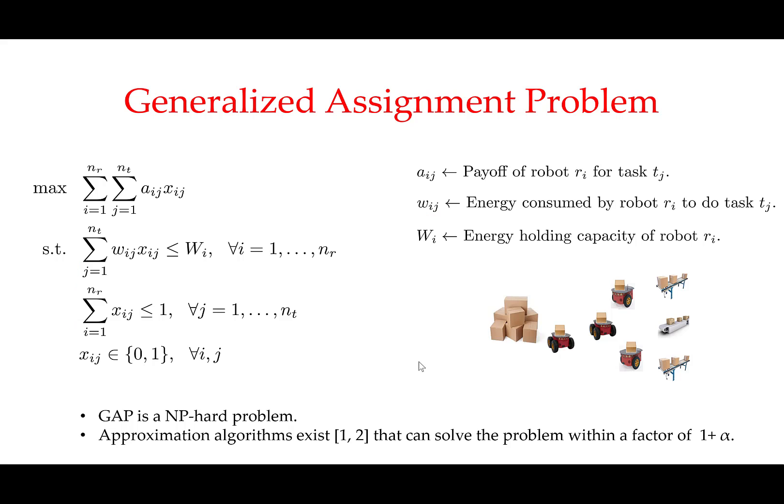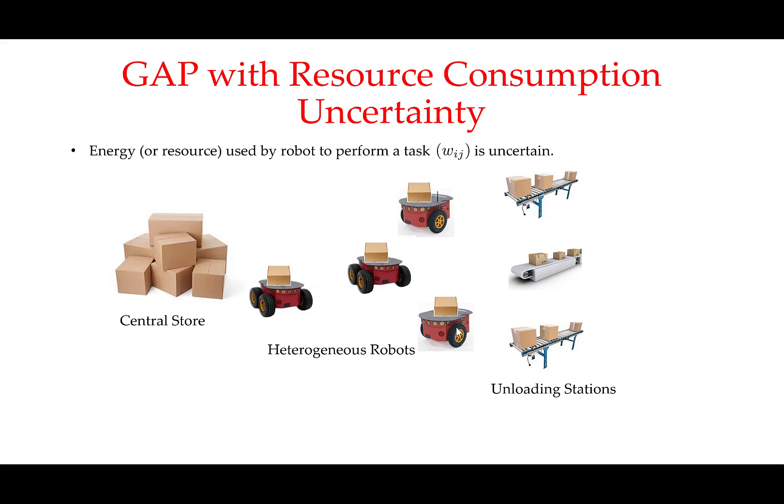Apart from the package delivery scenario, GAP can also be used to model scenarios that arise in package transfer with quadrotors or even in environmental sensing problems. In the classical formulation of the generalized assignment problem, it is assumed that the energy consumed to perform a particular task is deterministic. However, in practice, the resource consumption is a stochastic variable and depends upon unmodeled environmental variables. For example, for a quadrotor carrying a package, the wind speed can affect the energy consumption. In these settings, it is not possible to ensure that the resource constraints for each robot are satisfied deterministically.